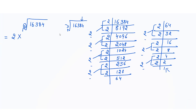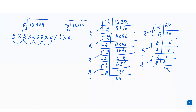We write down 2 seven times and multiply them: 2 twos are 4, 4 twos are 8, 8 twos are 16, 16 twos are 32, 32 twos are 64, 64 twos are 128. So the square root of 16384 is equal to 128.